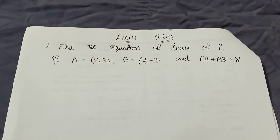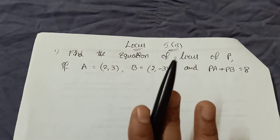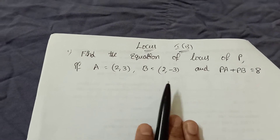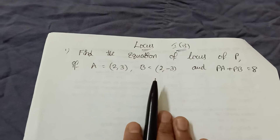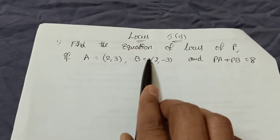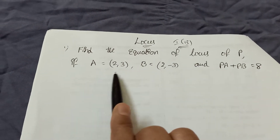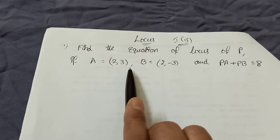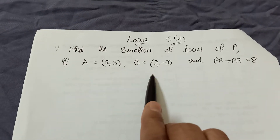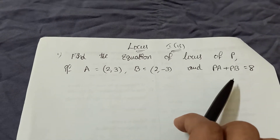Locus is worth 4 marks. The first problem in 11th will be this only. Find the equation of locus of P, if A equals (2, 3), B equals (2, -3), and PA plus PB equals 8.